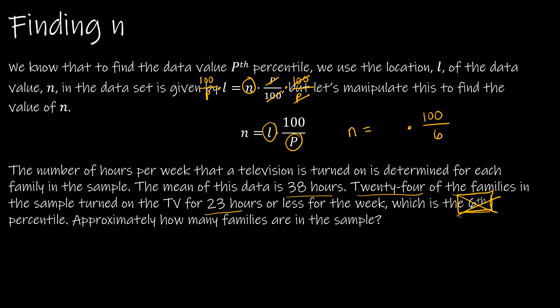So now I have to determine: is the location 38, 24, or 23? Obviously the mean of the data has nothing to do with the location, so I'm not going to worry about the mean. I have 24 and 23. Now, the sixth represents 23 hours or less, but this 24 is actually the value that we're going to use, and here's why: because if 23 hours or less is the sixth percentile, we know that 24 is the number of families to the left of that—it's the location, the 24th location. So now solving this, we're just going to multiply by 100 and divide by 6. So 24 times 100 divided by 6 gives us the value of 400.